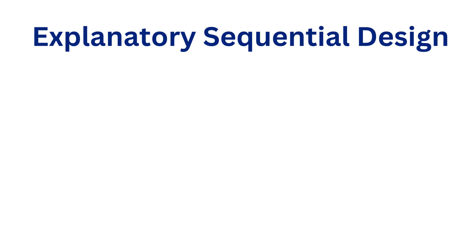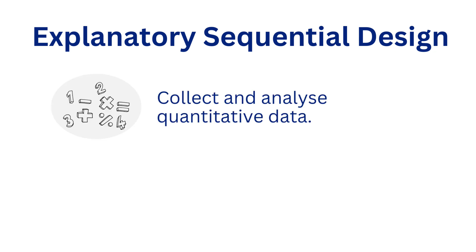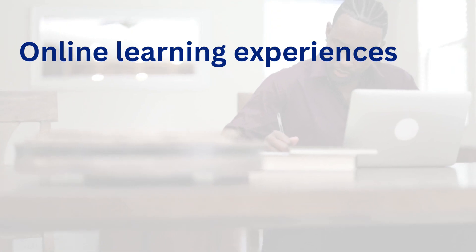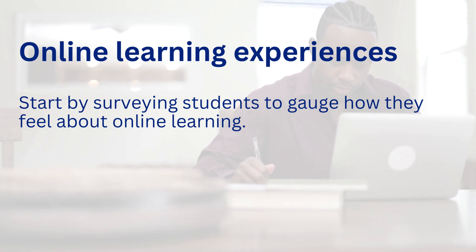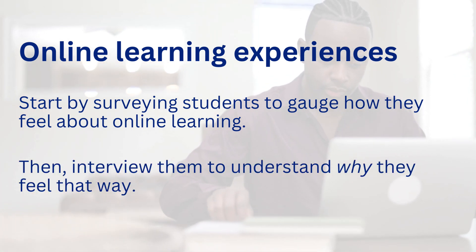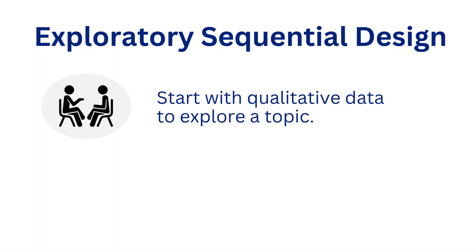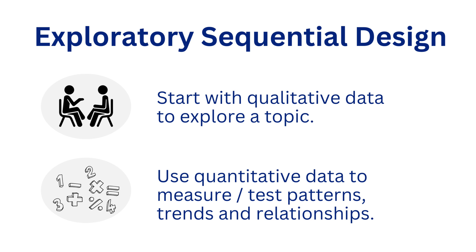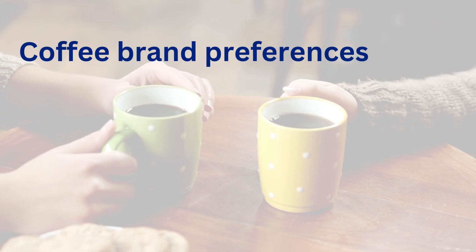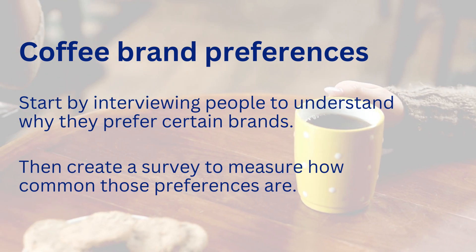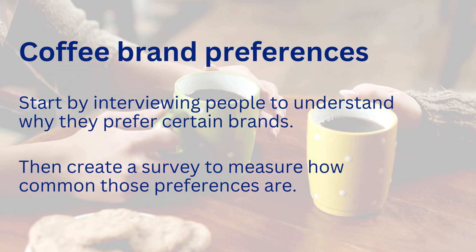Another design is the explanatory sequential design, where you start with quantitative data collection and analysis, and then use qualitative data to explain or expand on the findings. For example, you might survey students about their online learning experience and then follow that up with interviews to understand why they feel that way. Then there's the exploratory sequential design, where you start with qualitative data and then use quantitative data to test or measure the patterns that emerge. For example, you might interview people to understand why they prefer certain brands of coffee and then create a survey to measure how common those preferences are among a larger group.